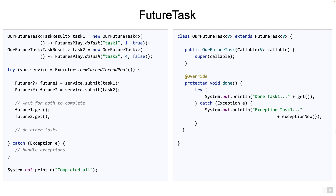Note that in all of the examples, we use the try-with-resources block which will automatically close the ExecutorService, and that will make sure that all threads are safely terminated. With this, we conclude our overview of Java futures.